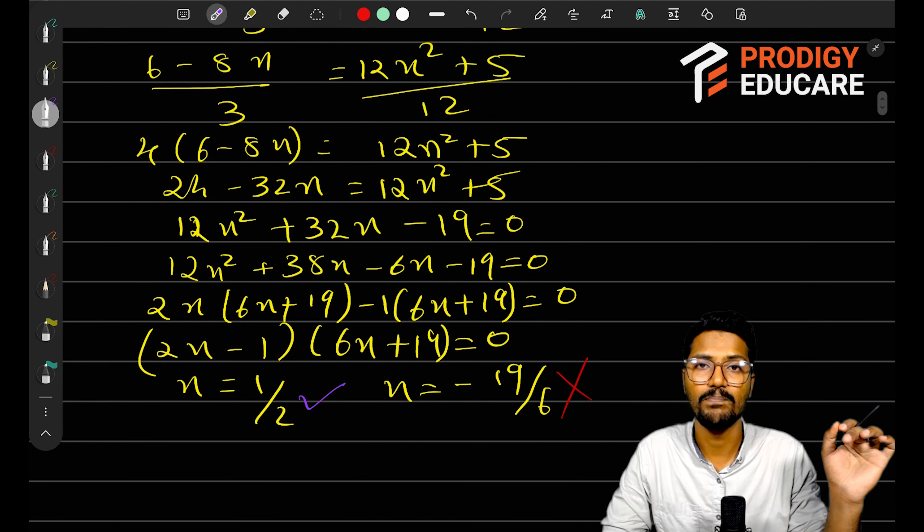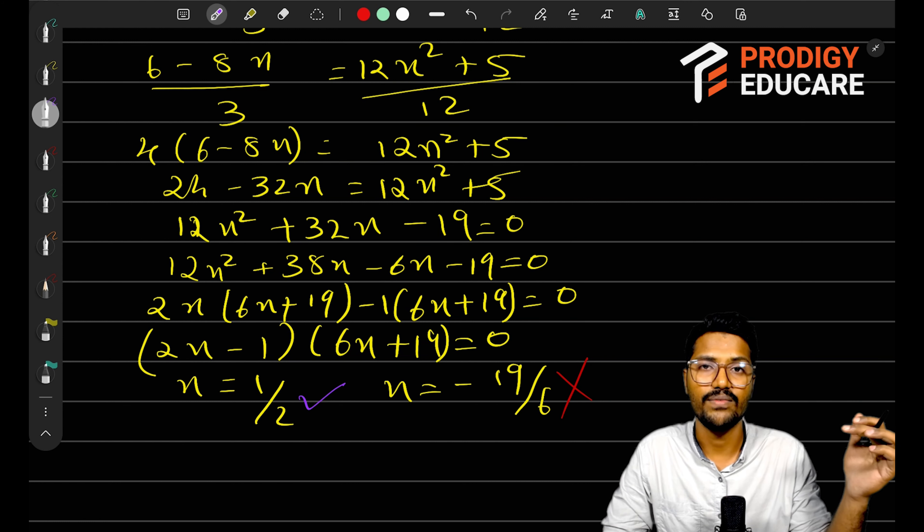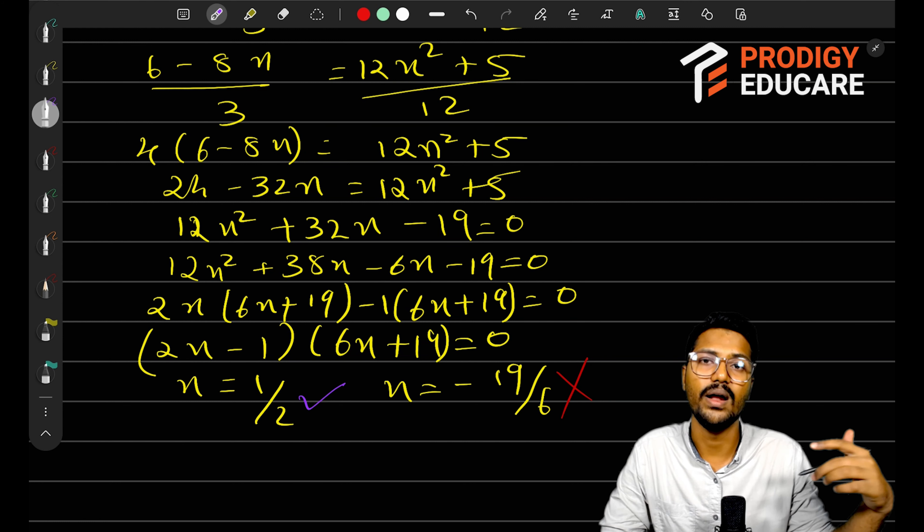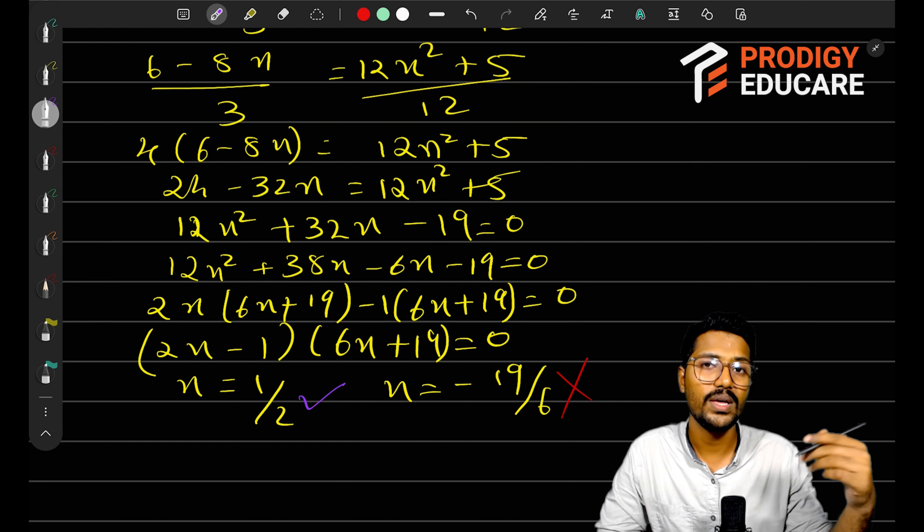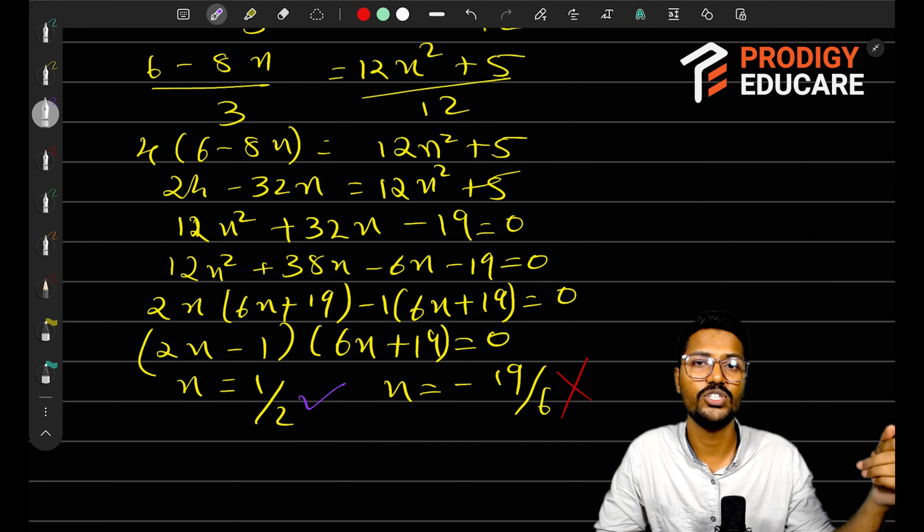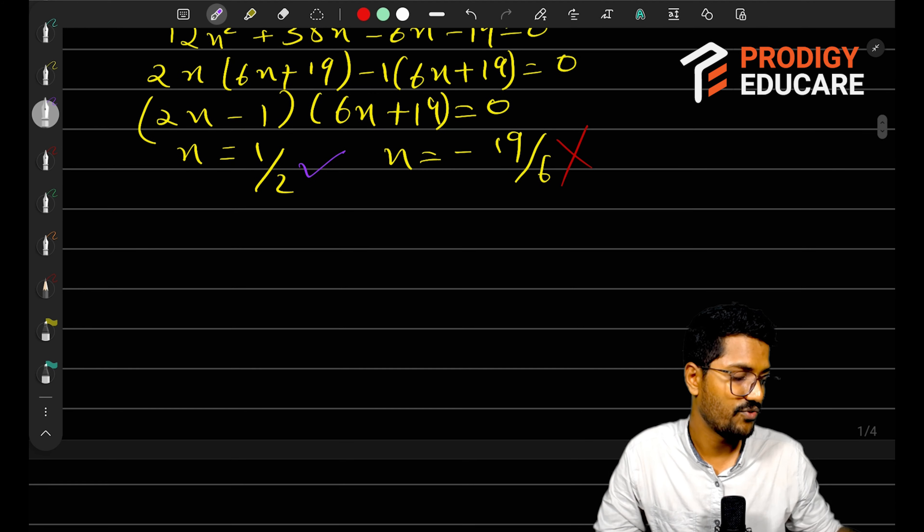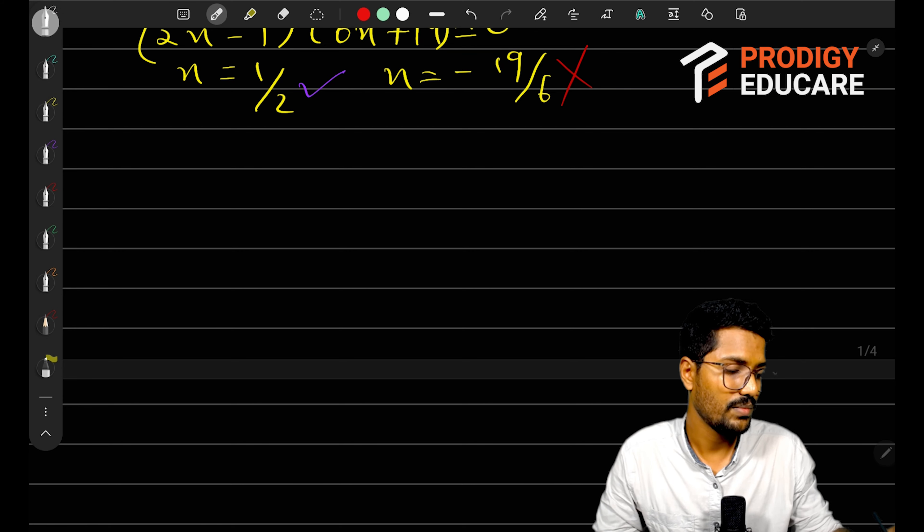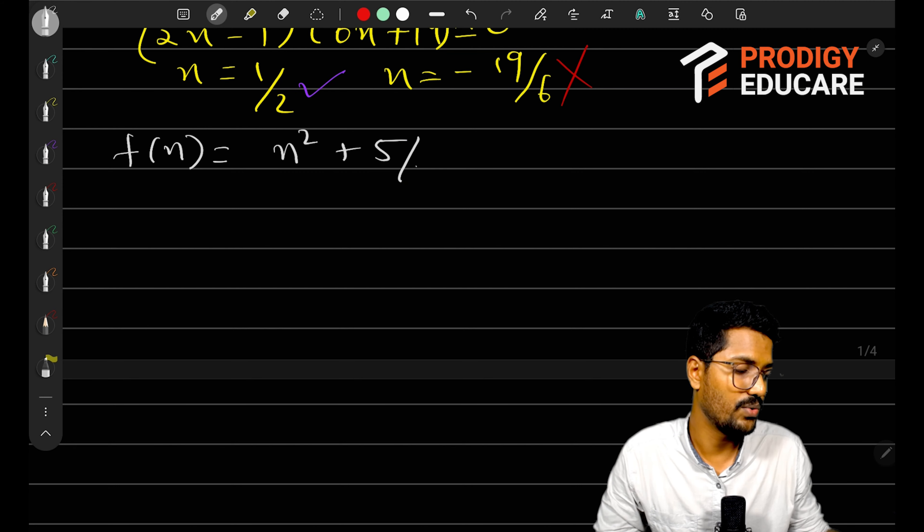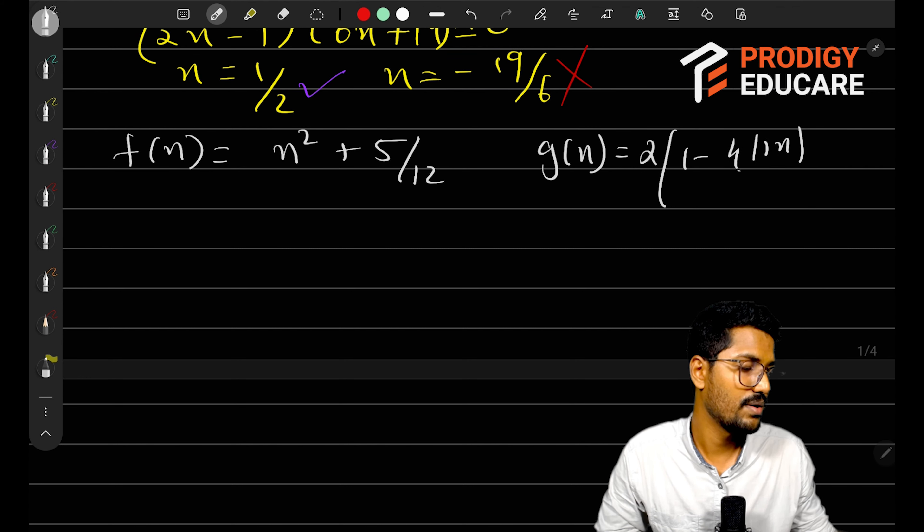We found the intersection point. Now let's draw the graphs. By drawing the graph, you will understand what other key points we need. Intersection is needed, but we need other key points too, which we'll find out. Let's draw the graph. For drawing the graph, I will write the functions. So f(x) equals x² + 5/12 and g(x) equals 2(1 - 4|x|/3).